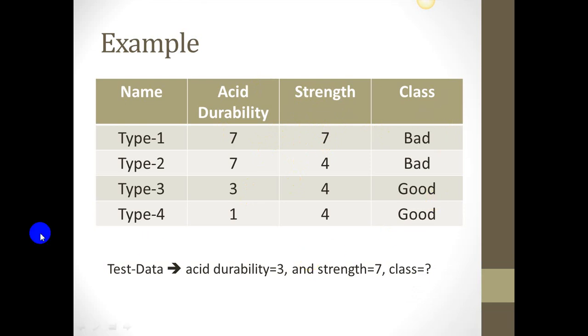Now this company wants to build a classifier which can help them in predicting the type or class of the particular tissue produced. So for example, if they are making a new tissue of type 5 whose acid durability is 3 and strength is 7, without conducting the actual survey which is very costly and time-consuming, they want to predict how well this particular type of tissue will be taken by their customers. Let's try to understand how k-NN can help us with this prediction.